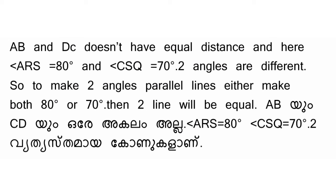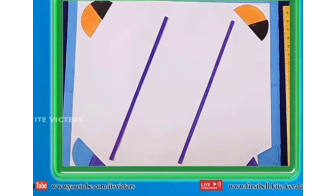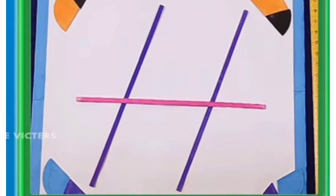We have parallel lines. Angle AR is equal to 80 degrees and angle CSQ is equal to 70 degrees. Two angles are different, so to make two parallel lines, either make both 18 or 17. Then two lines will be parallel lines and two lines will be equal.